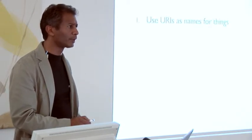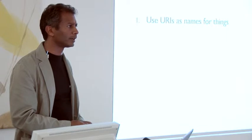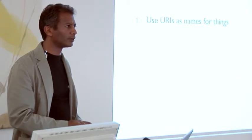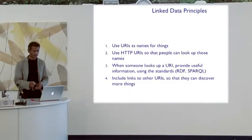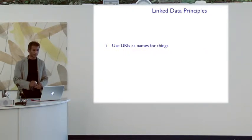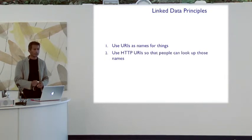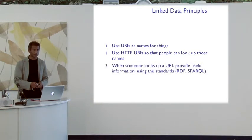Linked data is based on four very simple principles. The first one is that we use URIs to name things — everything has a URI so we can find it. These URIs are HTTP URIs so that when we find it, they can be resolved and something can be returned. When somebody looks up a URI, we use standards associated with linked data, which are RDF and SPARQL, to access and return the things.